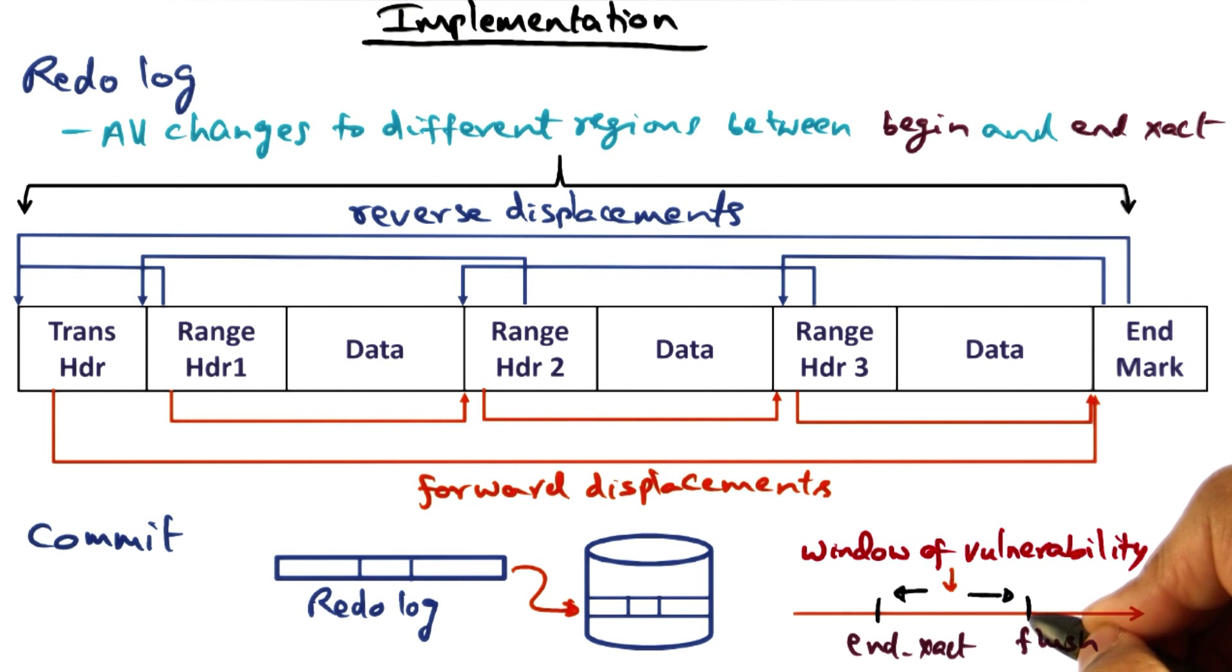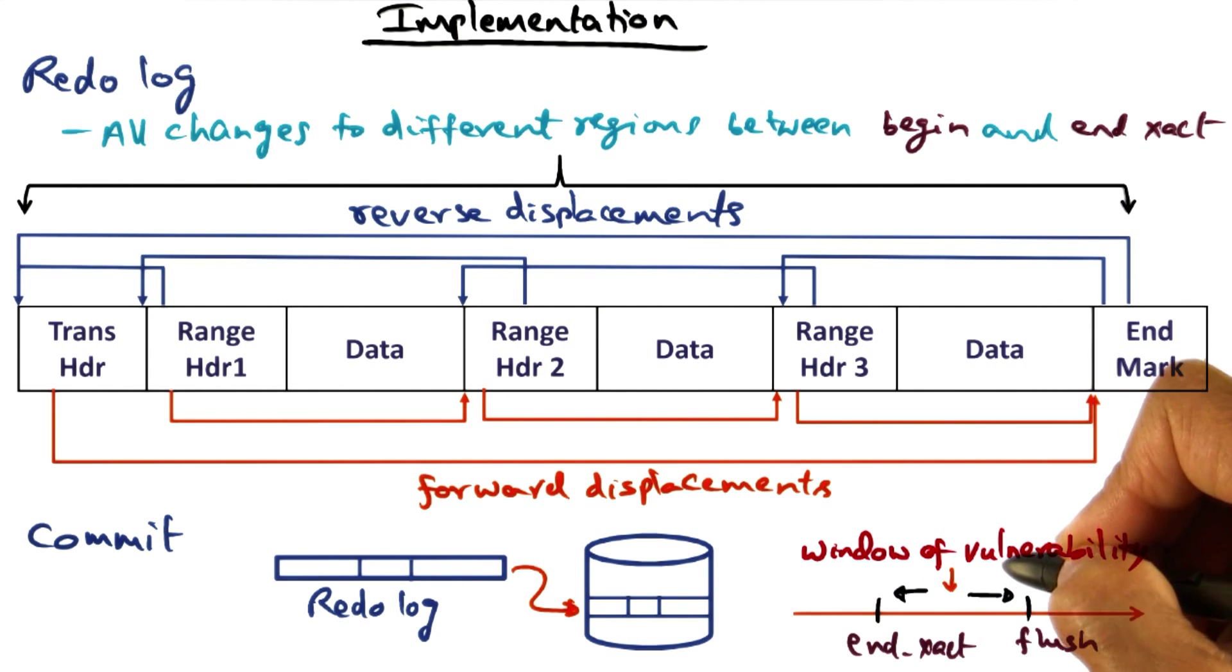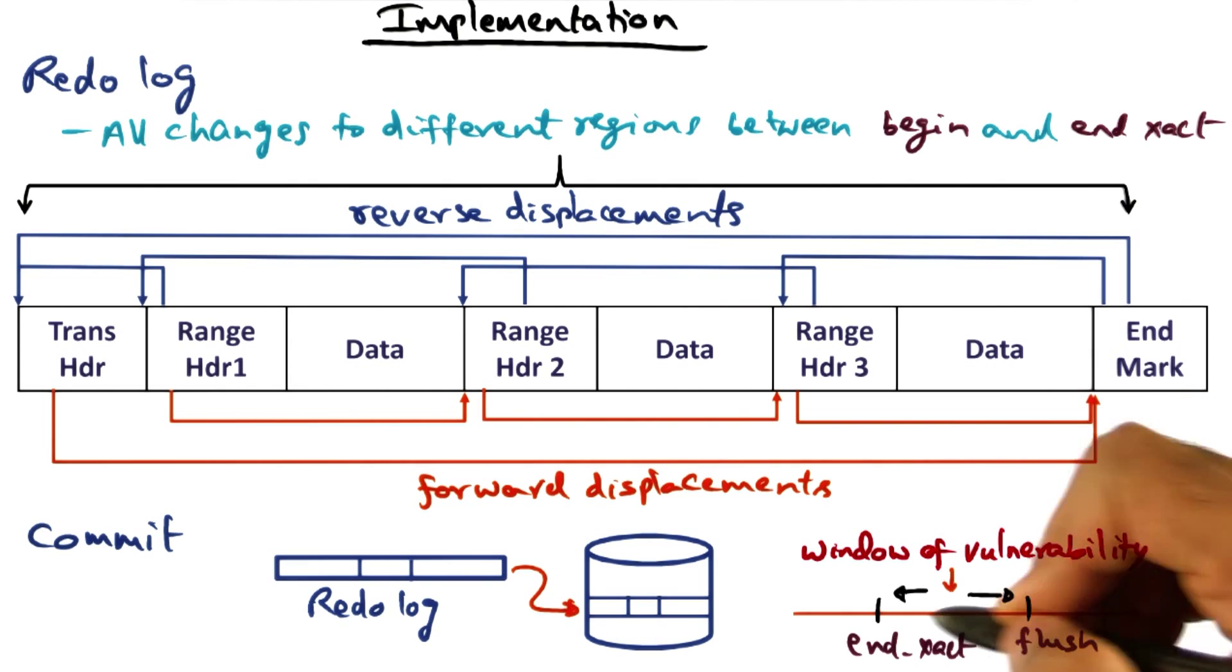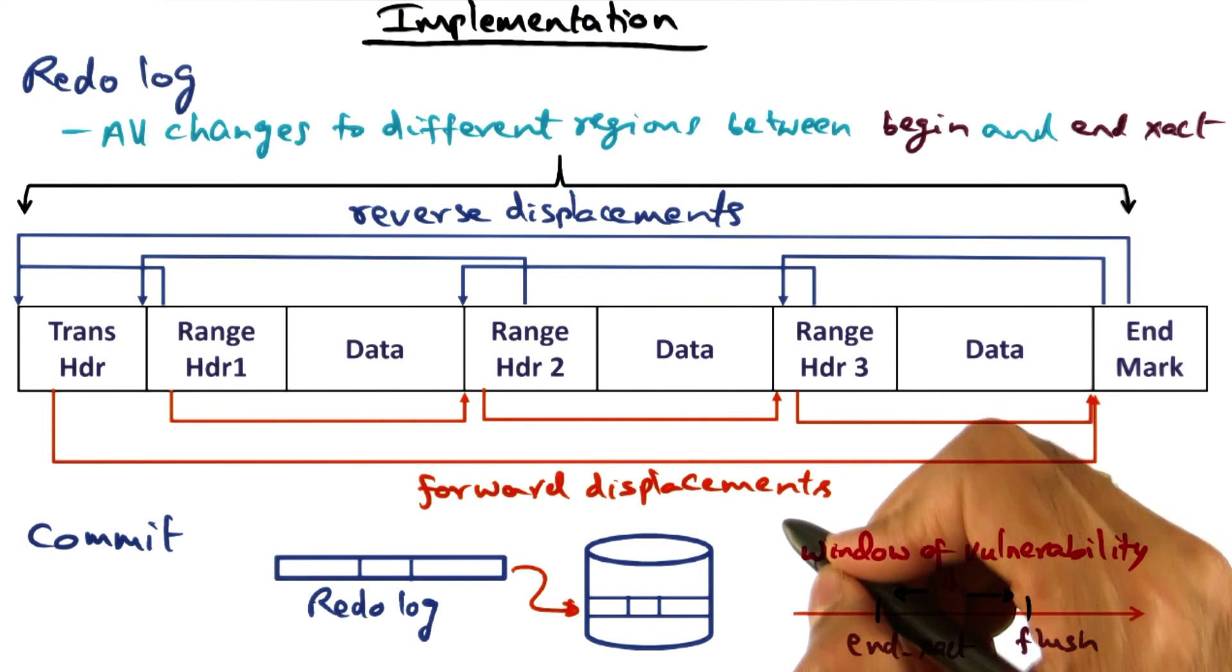If the system crashes within this time, then we've lost the redo records that we wrote to memory. That is important to understand - there is a price you pay to get this flexibility and performance in the implementation.